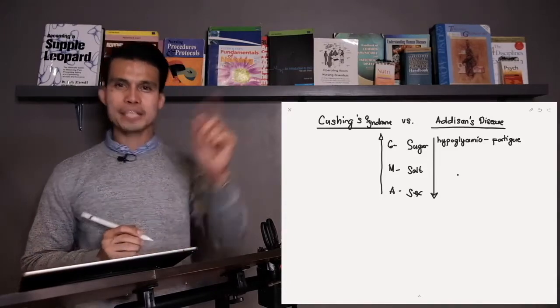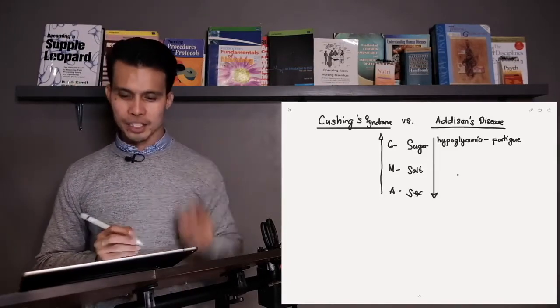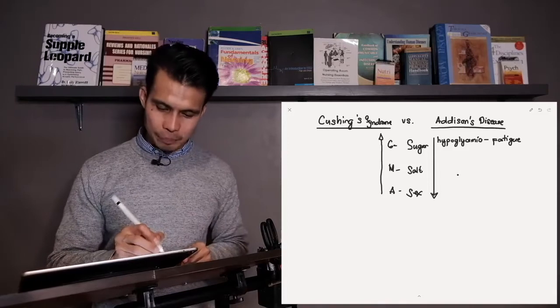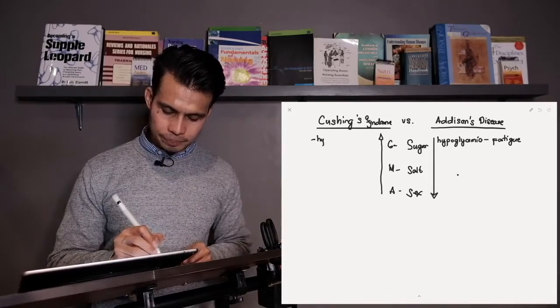Where should we place hyperglycemia? That goes in Cushing's. So hyperglycemia is found in Cushing's syndrome due to the increased glucocorticoids raising blood sugar.